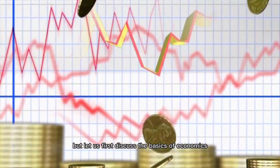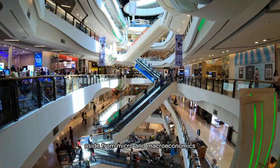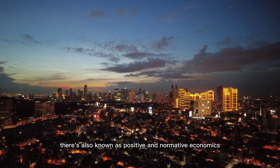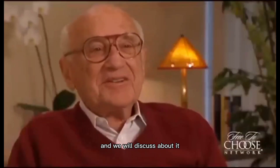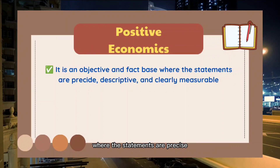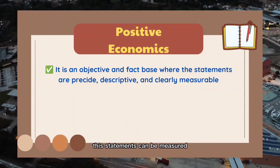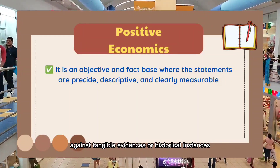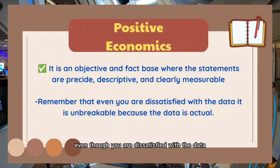Aside from micro and macro economics, there is also what is known as positive and normative economics. Positive economics is objective and fact-based, where statements are precise, descriptive, and clearly measurable. These statements can be measured against tangible evidence or historical instances, and even if you are dissatisfied with the data, it is not debatable because it is factual.